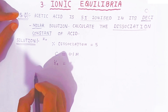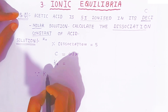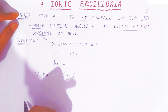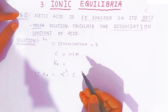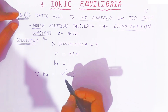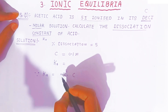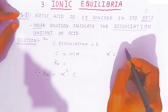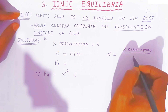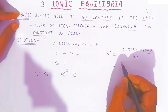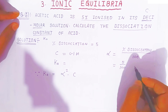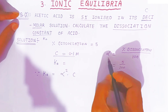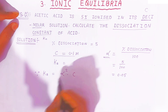Since you know, Ka — the dissociation constant — is equal to alpha squared into C. Now what is required is alpha, but we don't know alpha. So with the help of the percent dissociation, we are going to find alpha, that is the degree of dissociation. Alpha is nothing but degree of dissociation. You have to calculate it by dividing percent dissociation by 100: that is 5 divided by 100, which gives 0.05.